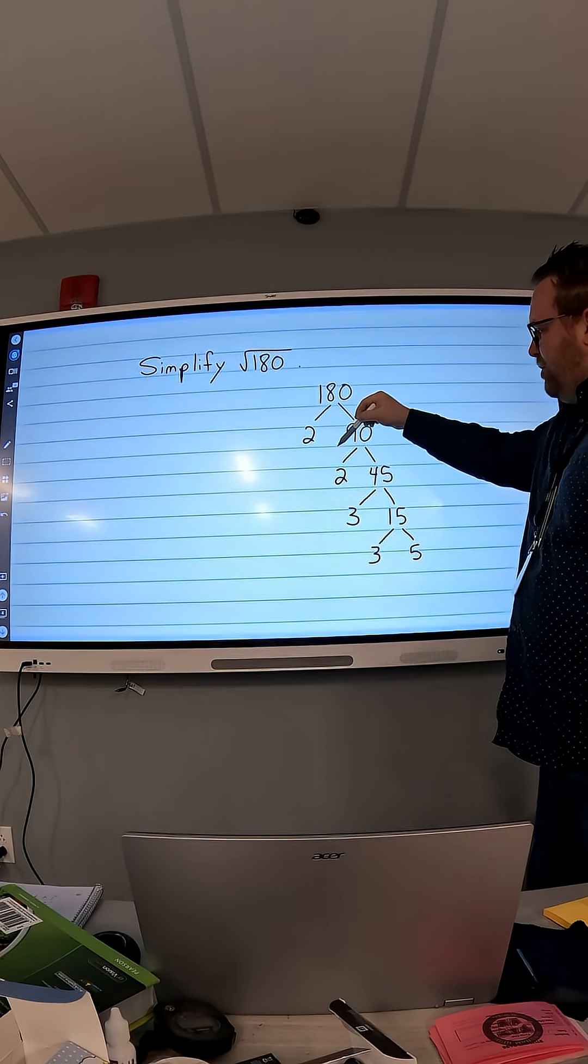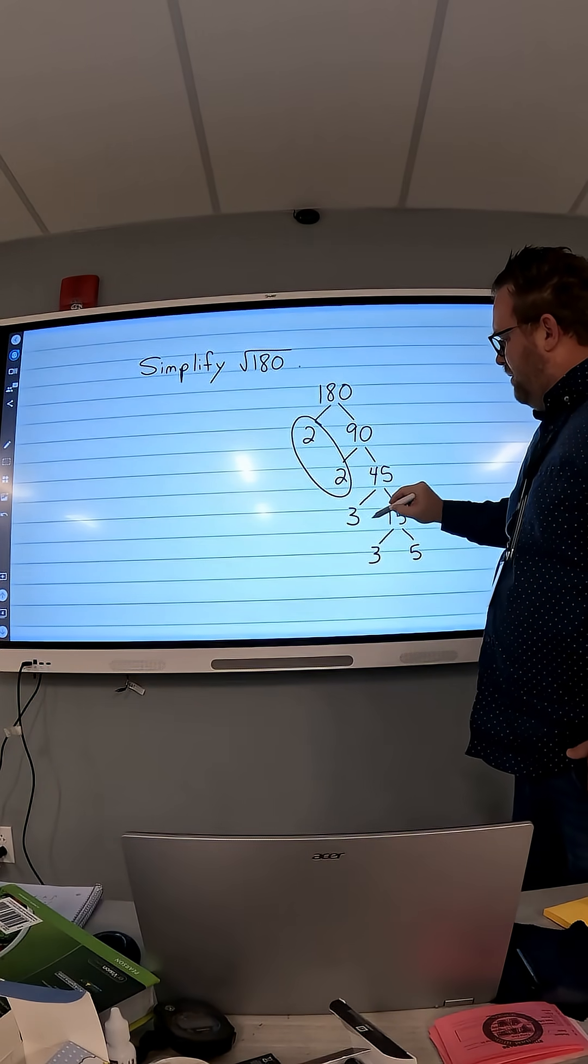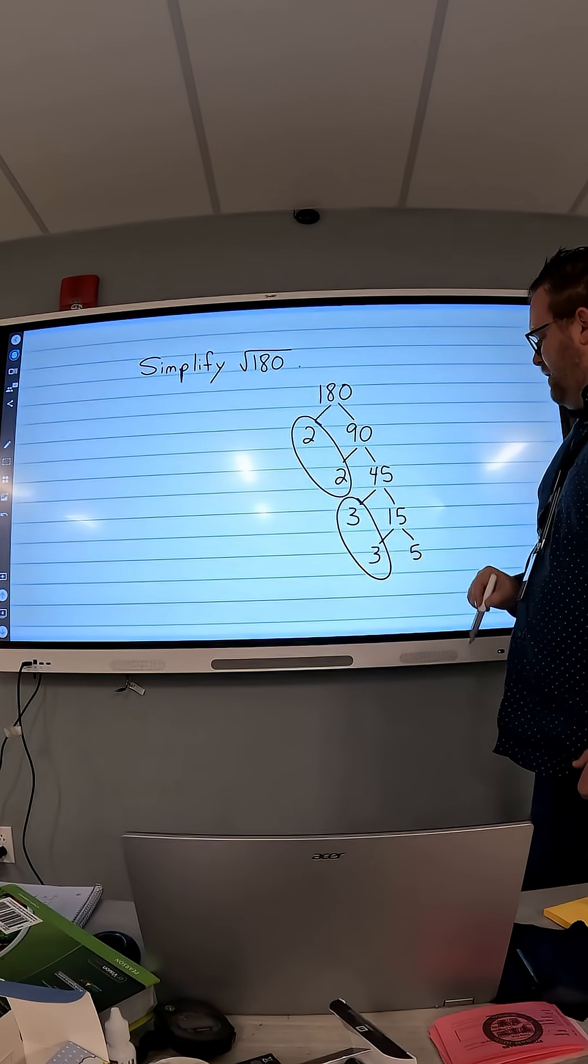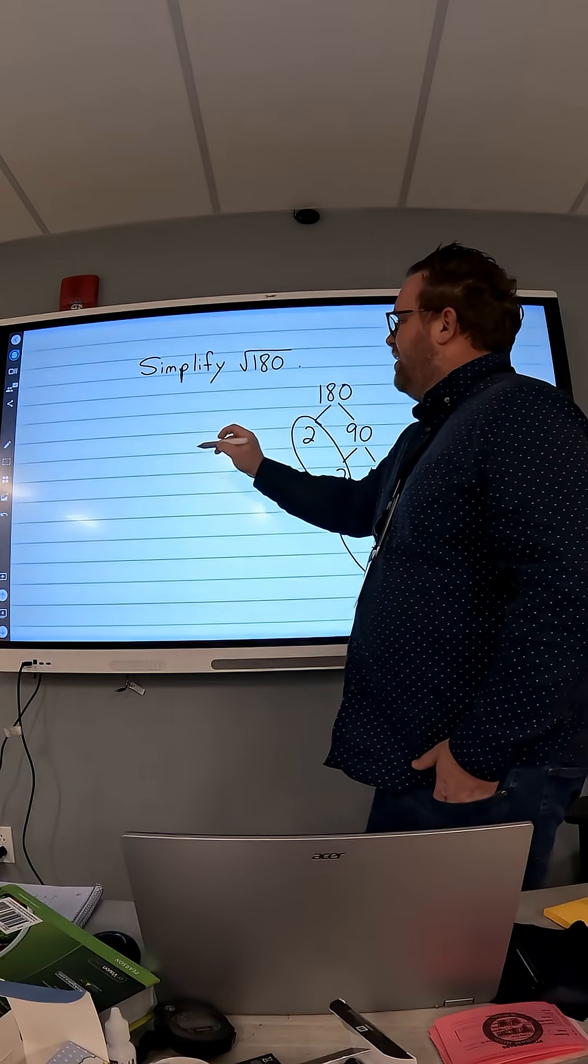So 180 is basically 2 times 2 times 3 times 3 times 5. So 2 times 2 is 2 squared. 3 times 3 is 3 squared. So I can take those out of the square root. I'm going to show you that in a minute, and then I'm going to have to leave the 5.